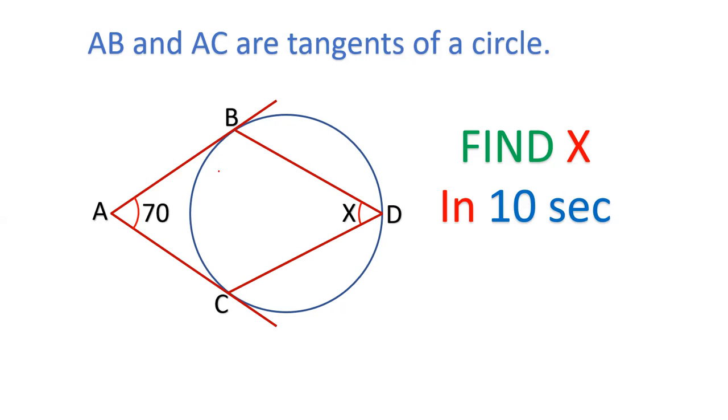I have made two outside points. Now the two points which are there, where the two tangents touch the circle from that point, there is an angle BDC made here and we have to find out the value of x. Can you find the value of x in 10 seconds?